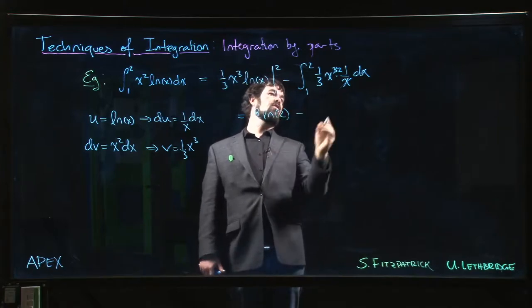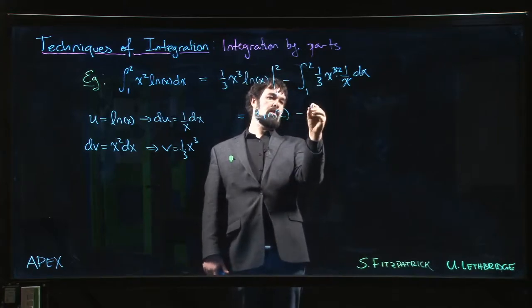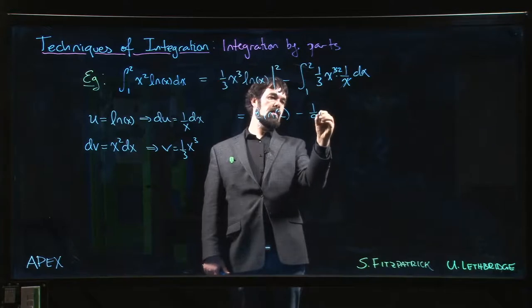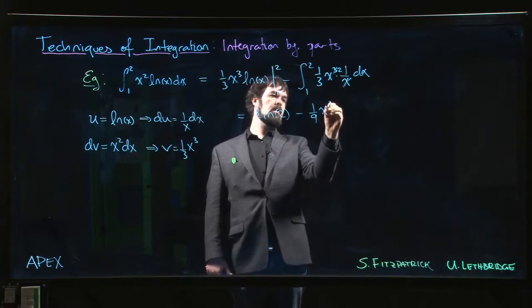Subtract. So we've got one third x squared there. The anti-derivative is going to be minus 1 over 9 x cubed.